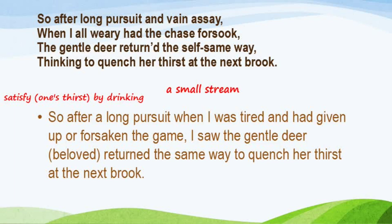In the second quatrain, Edmund Spenser is showing the virtue of patience. After a long pursuit — as seen in the first quatrain where the hunter is very tired — he decides to take rest and forsakes the game. He then sees the gentle deer returning the same way. Here the deer is compared to Elizabeth Boyle. The deer returns to quench her thirst at the next brook. 'Quench' means to satisfy one's thirst by drinking, and 'brook' means a small stream.